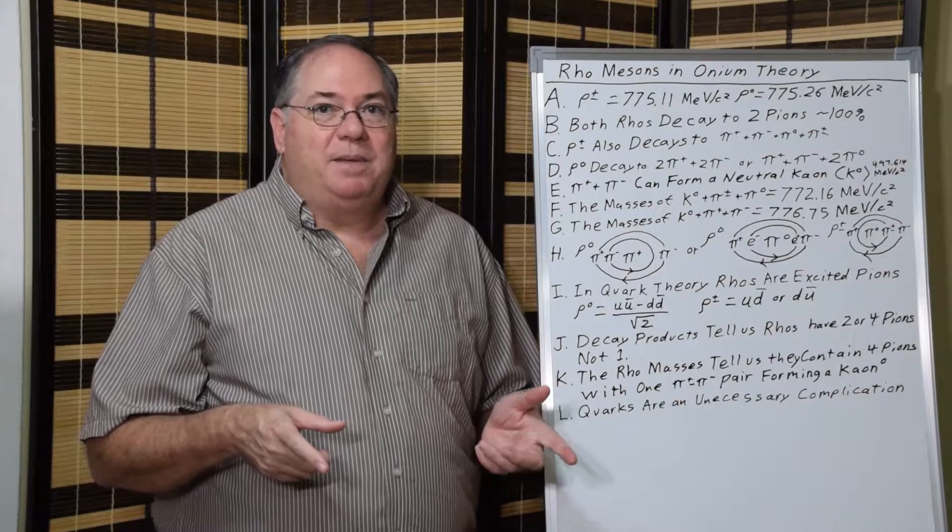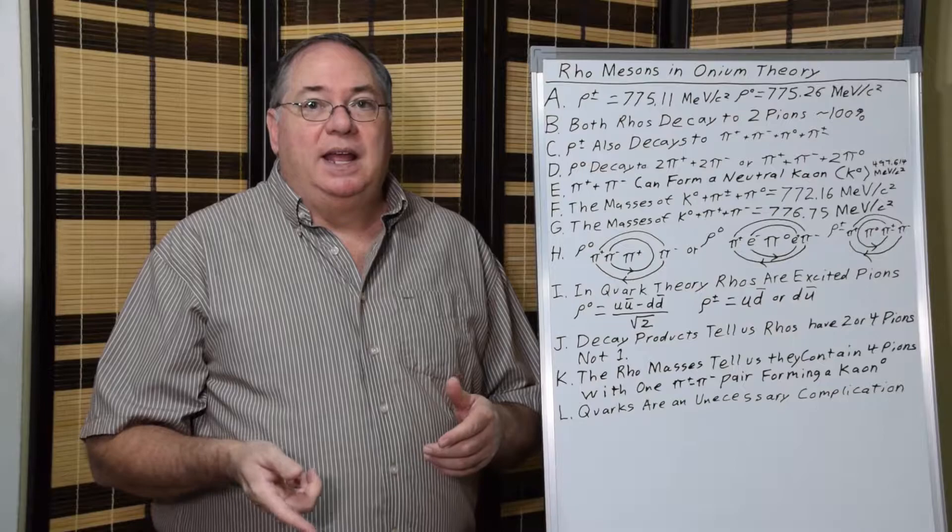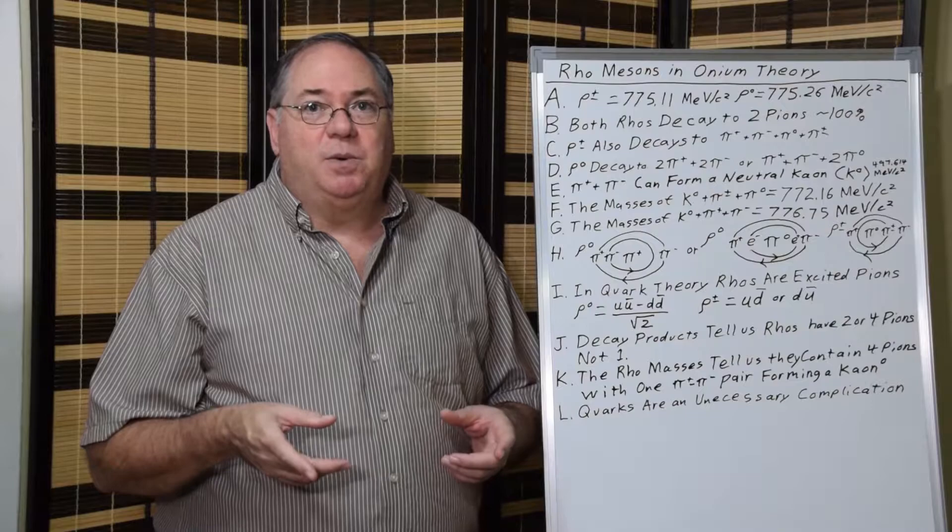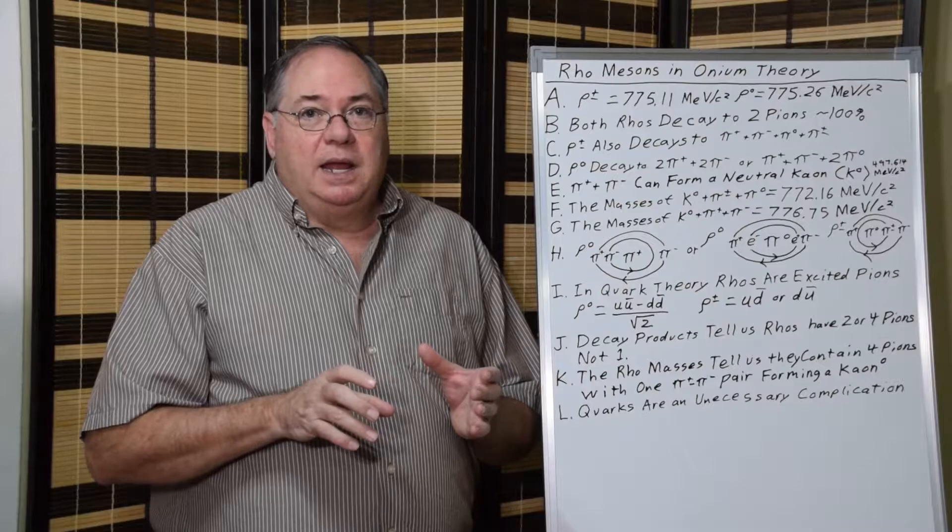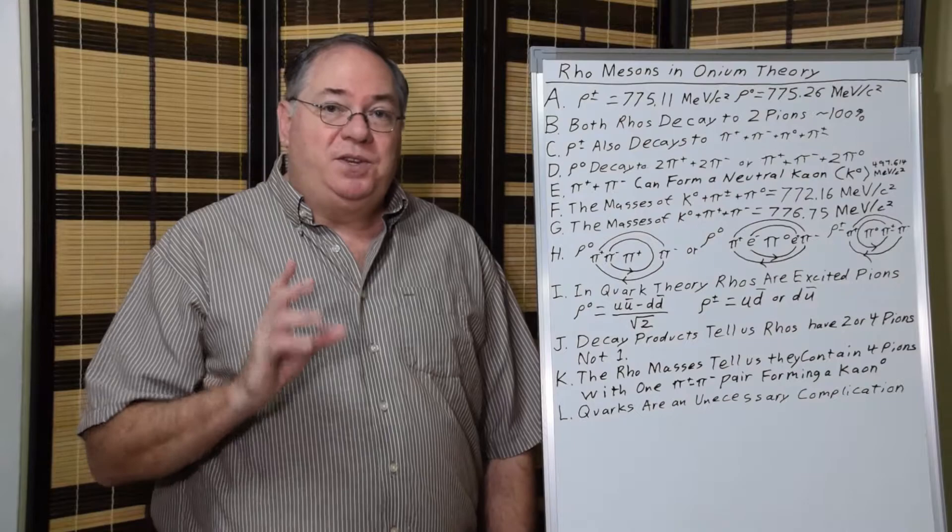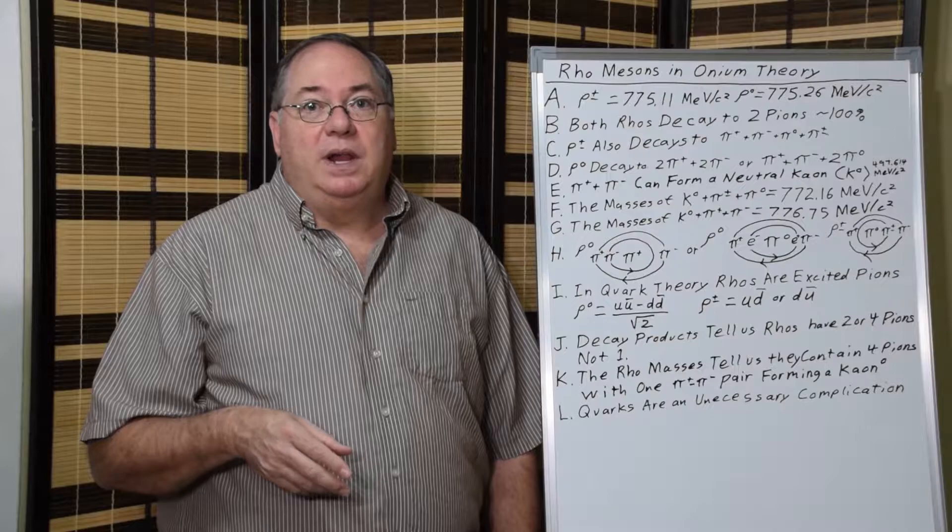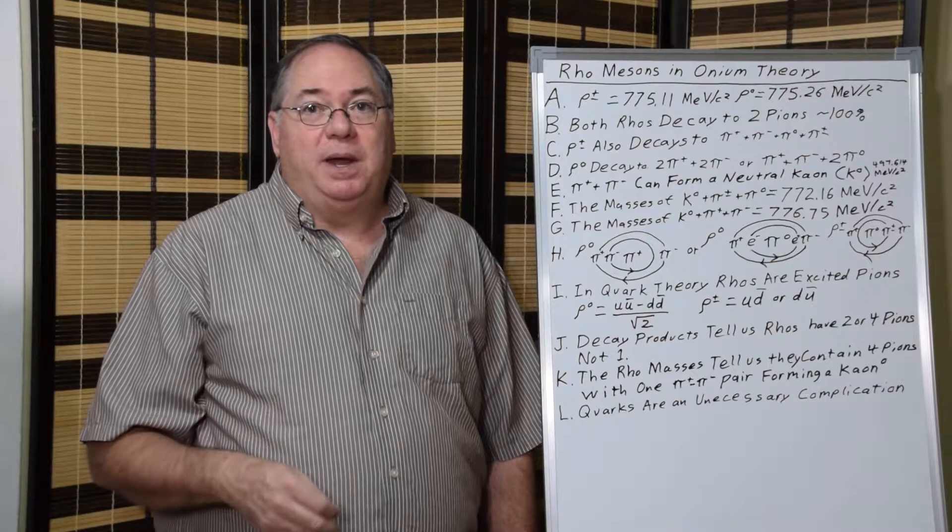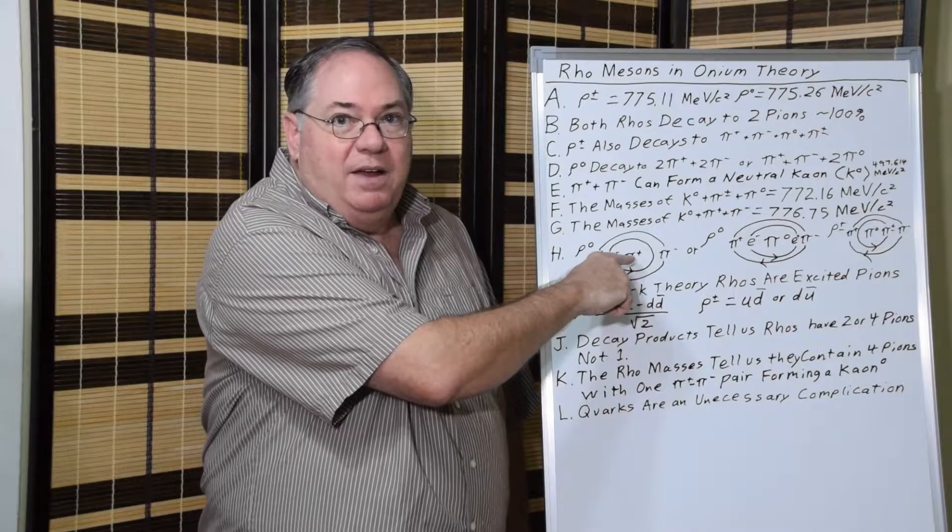We can also add up the mass of a neutral kaon and two neutral pions, which gives us approximately 767 MeV/c². That's a little lower than the known rho mass, but the neutral pions will couple magnetically to increase the total energy slightly, making up the difference. We actually have two different possible models for the neutral rho: one that has two neutral pions, and one that has an oppositely charged set of pions in addition to the kaon.